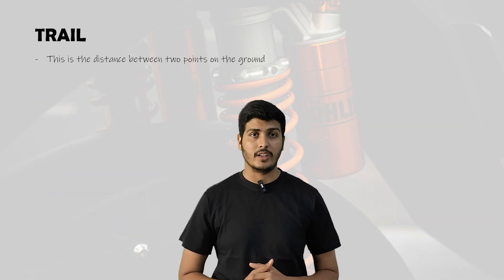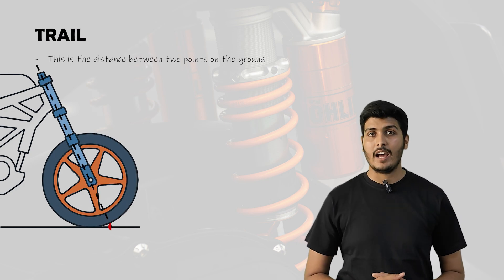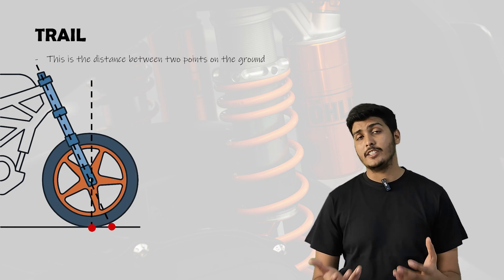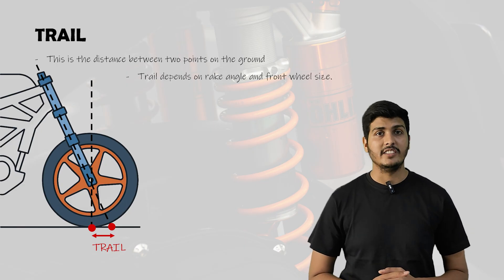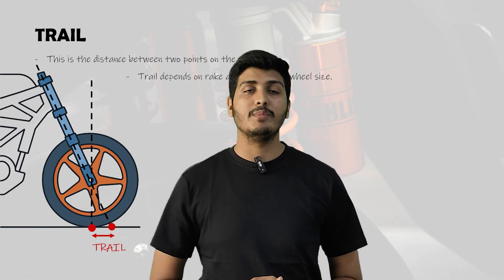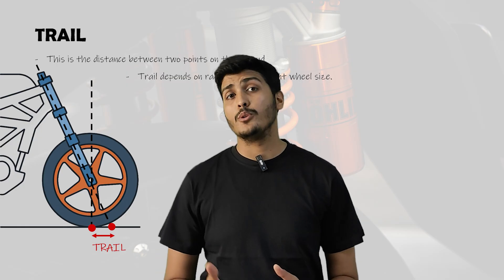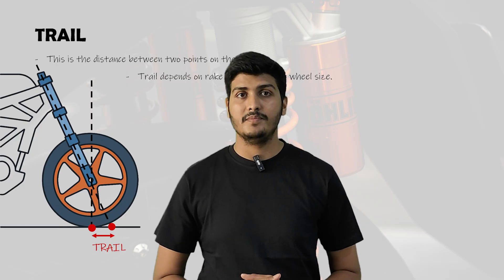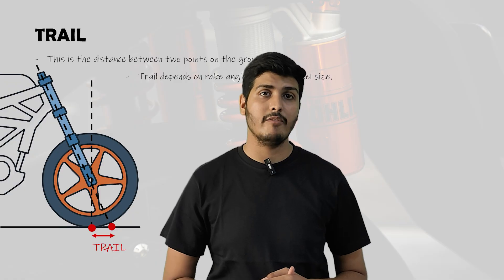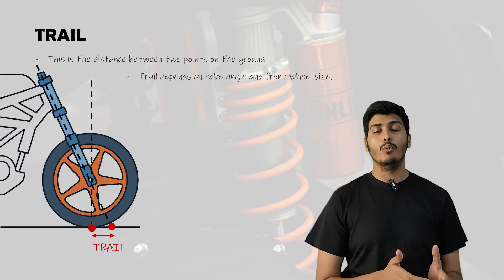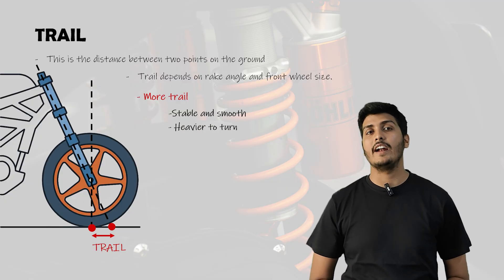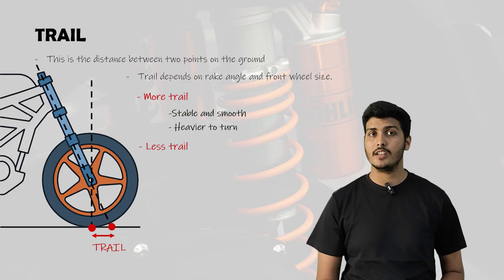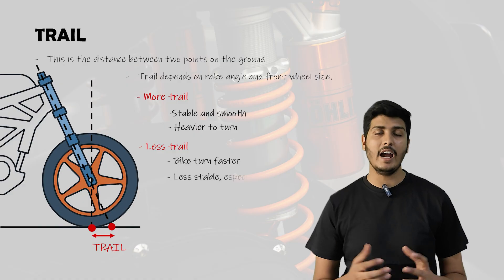The next term is trail — the distance between two points on the ground: where the front suspension line actually touches the ground and where the tire actually touches the ground. Trail depends on rake angle and front wheel size. It acts like a lever to keep the front wheel stable and helps it return to straight after a turn. Think of it as the gap between the steering pivot and the tire's contact point. More trail makes the bike stable and smooth, especially in straight-line riding; less trail makes the bike turn faster but may feel unstable at high speed.